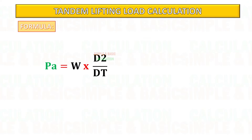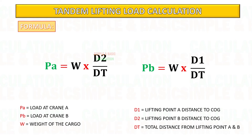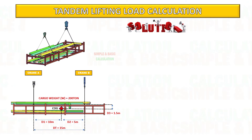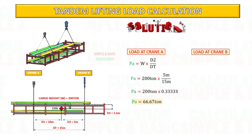This is the formula we will use for the load distribution calculation for each crane. Based on the formula given, start to substitute all given values and begin to calculate to get the load at crane A. Cargo weight multiplied by D2 and divided by DT.